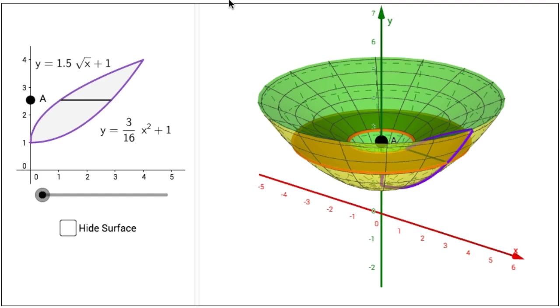This interactive figure illustrates creating solids of revolution using the washer method by taking a region in the xy plane and rotating it around the y axis.